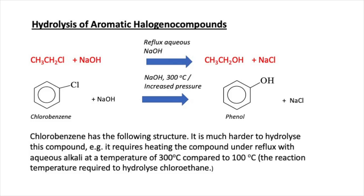Now let's look at hydrolysis of aromatic halogeno compounds — compounds with a benzene ring where a halogen is directly attached to the ring. We've seen that we can swap a halogen on a halogeanoalkane with an OH group by heating with aqueous NaOH or KOH under reflux, which boils at roughly 100°C. If we want to do the same reaction with an aromatic halogeno compound, we need a much higher temperature.